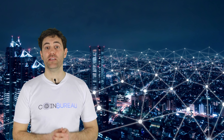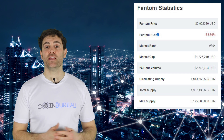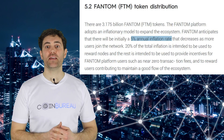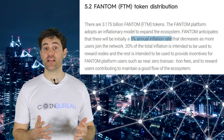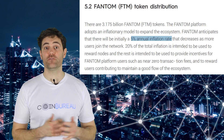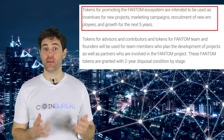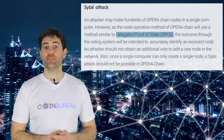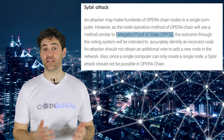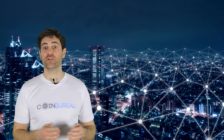Let's talk about the Fantom coin, FTM. There is a total supply of just over 3 billion FTM, with a little under 2 billion currently in circulation. Fantom intends to use an inflationary model to expand its ecosystem, with coins primarily used for rewards. The white paper states an initial inflation rate of 5% that will decrease as users join the network. 20% of that inflation rewards nodes, while the rest incentivizes other users contributing to platform growth. FTM is also used for staking — the rewards pool shared by all stakers, meaning the more FTM staked, the lower the reward due to dilution.